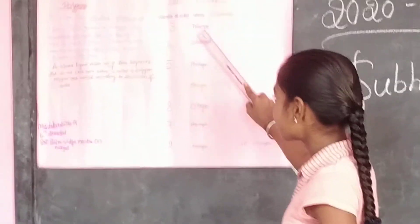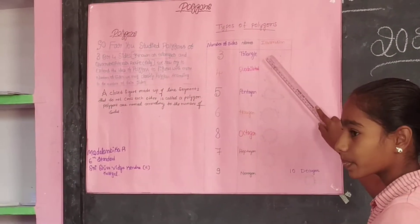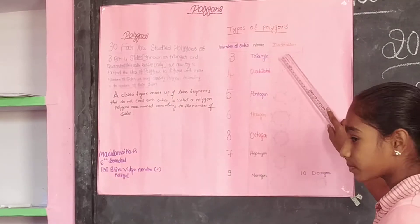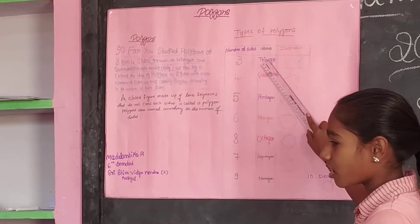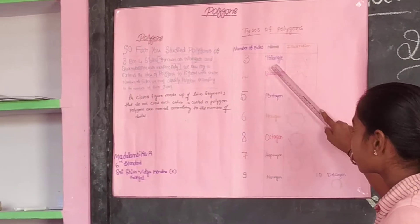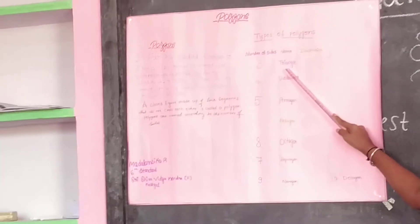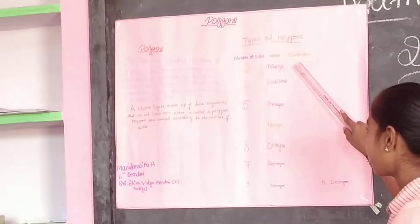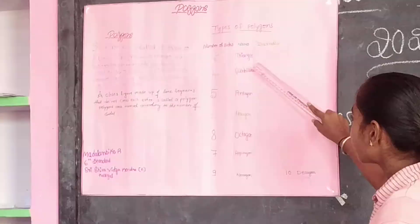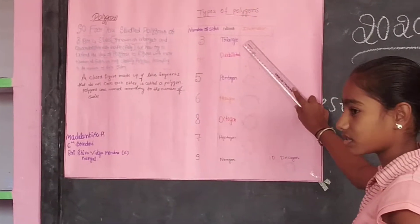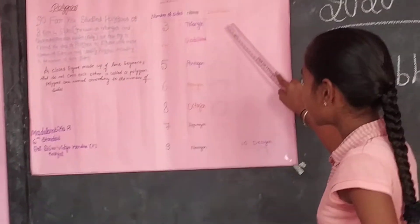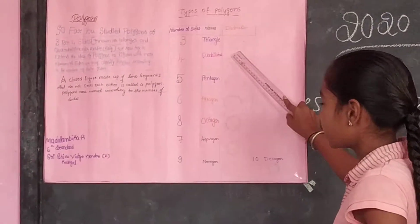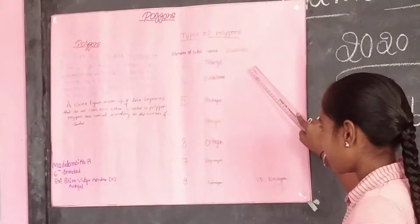Three-sided polygons — this is called a triangle. One, two, three. Three sides.